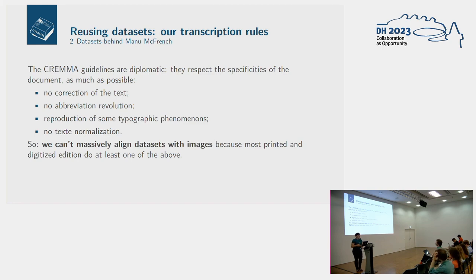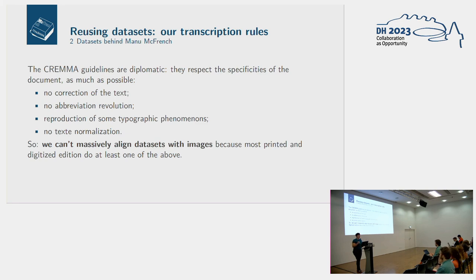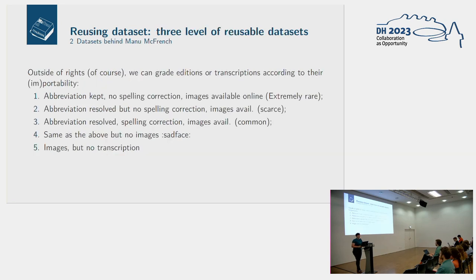Before going into how we reused datasets, one very important thing to cover is the transcription guidelines. We are following a diplomatic approach, which means we respect as much as possible all the specificities in the documents. That means we don't correct mistakes in the text, we don't resolve abbreviations, we reproduce typographic specificities, and there is no text normalization. This meant we could not just take many datasets and merge them into one, because we first needed to make sure they conformed to our transcription guidelines.